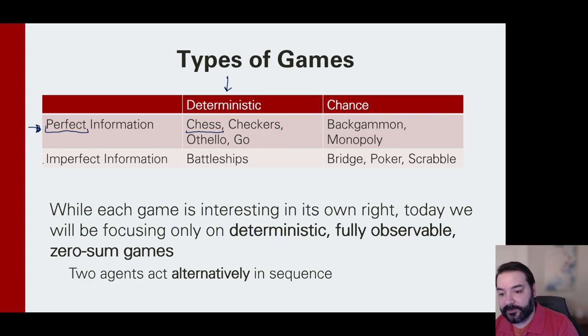That starts to change when we start to get to imperfect information because maybe I can't model all of the information. My agent, sure, has their battleships down on their board, but I don't know where the battleships of my opposing agent are. And so I would have to make some assumptions about what their side of the board works with.